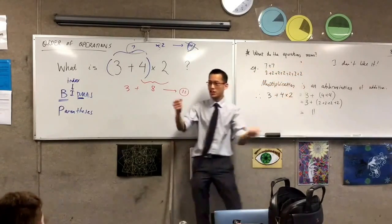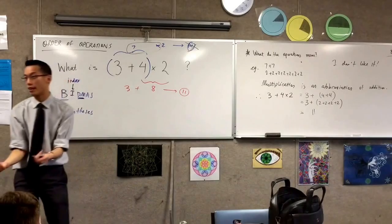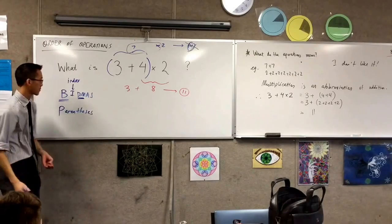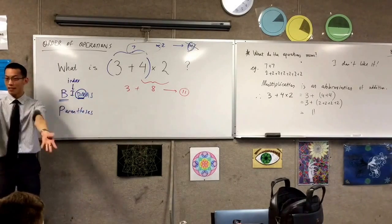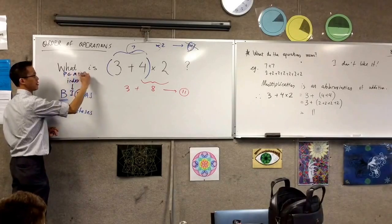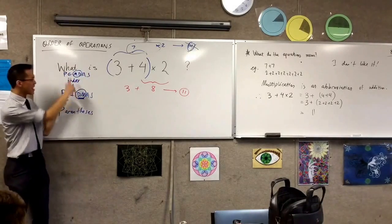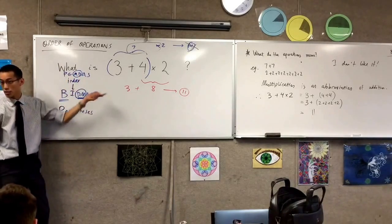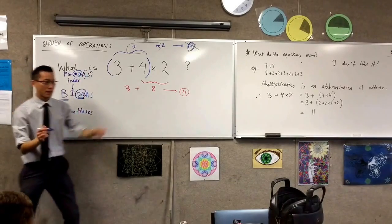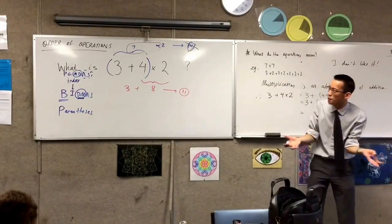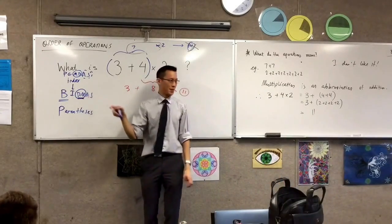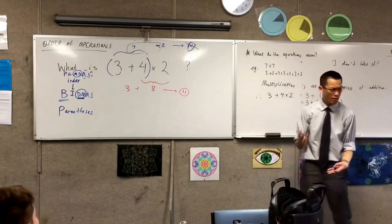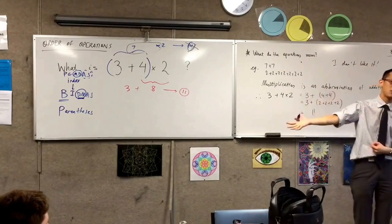Multiplication and division just flip sides of each other — multiplying by three makes something three times bigger, dividing by three makes it three times smaller. So really the D and M are one unit, which is why in the American version they have it switched around — that M, D order doesn't matter. And the last letters? Addition and subtraction. Again, you can do subtractions first and additions — we generally just go left to right, just like we normally read. It's not that the A has to be first.